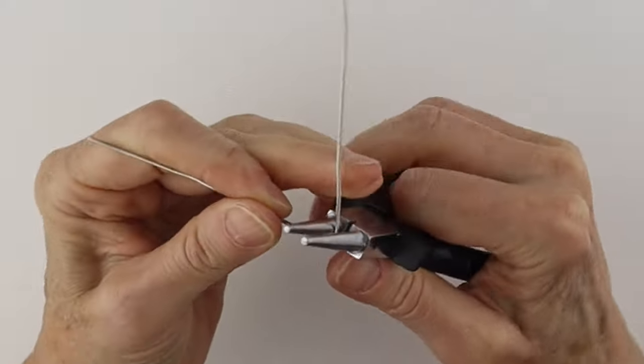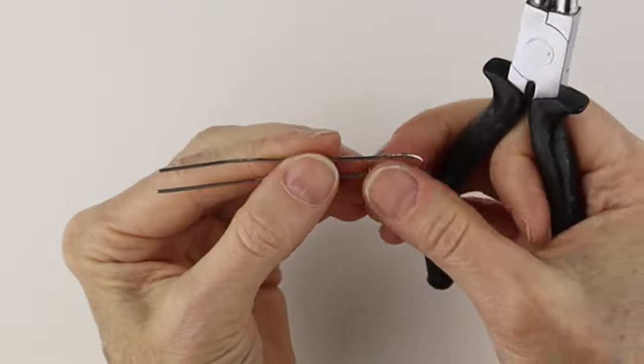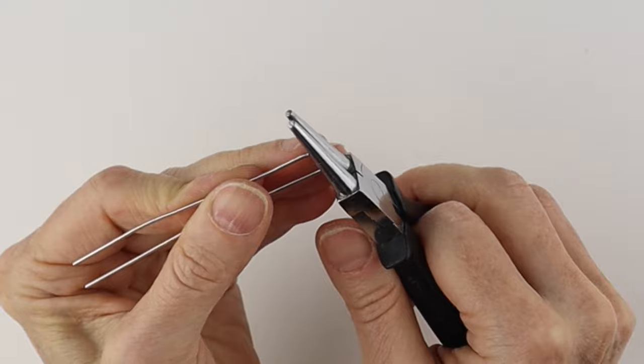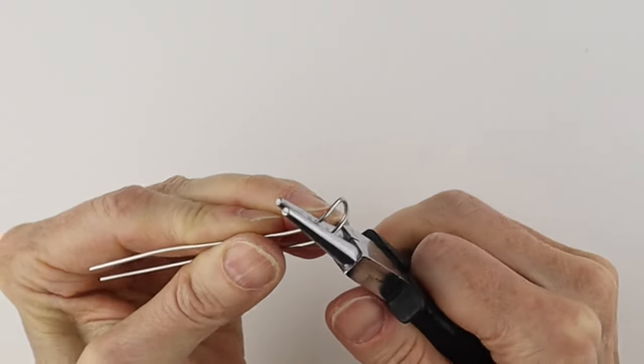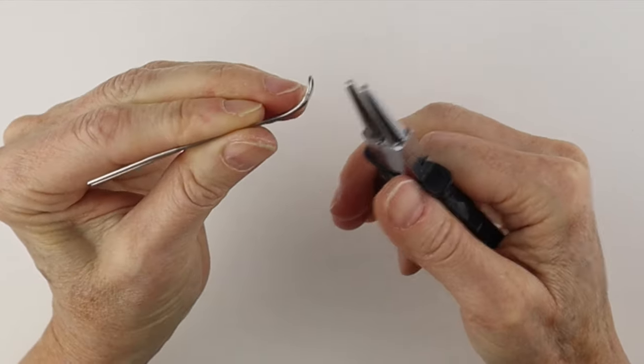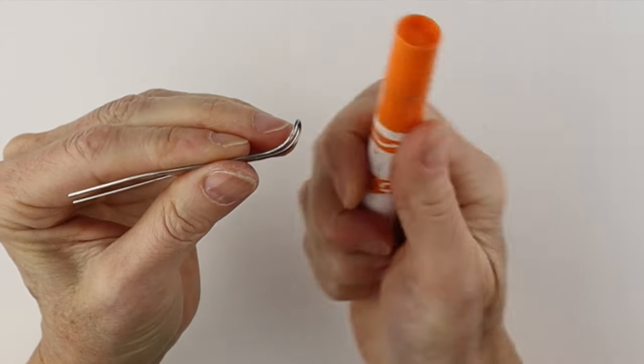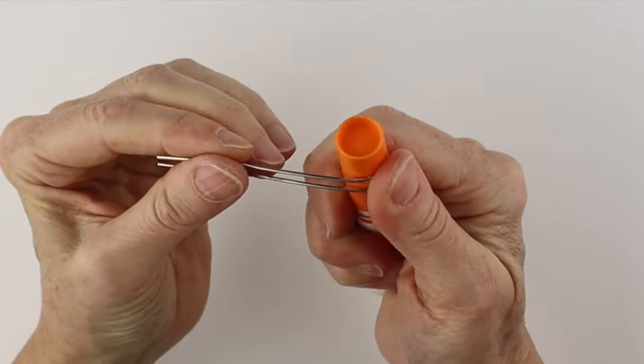We're just going to start the curve with our pliers so this end is a bit curved. Then get the round form and hold that and bring one end around like that.